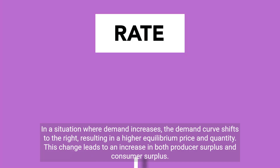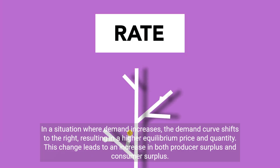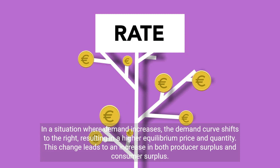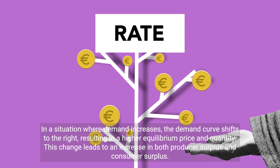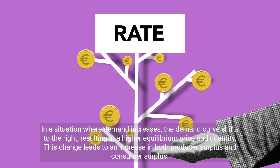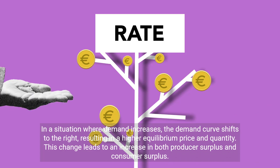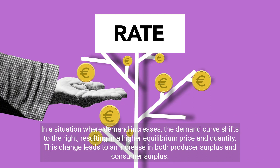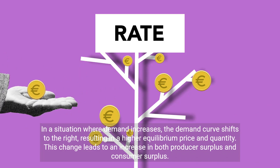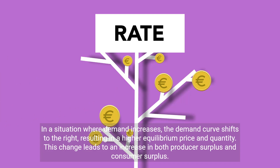In a situation where demand increases, the demand curve shifts to the right, resulting in a higher equilibrium price and quantity. This change leads to an increase in both producer surplus and consumer surplus.